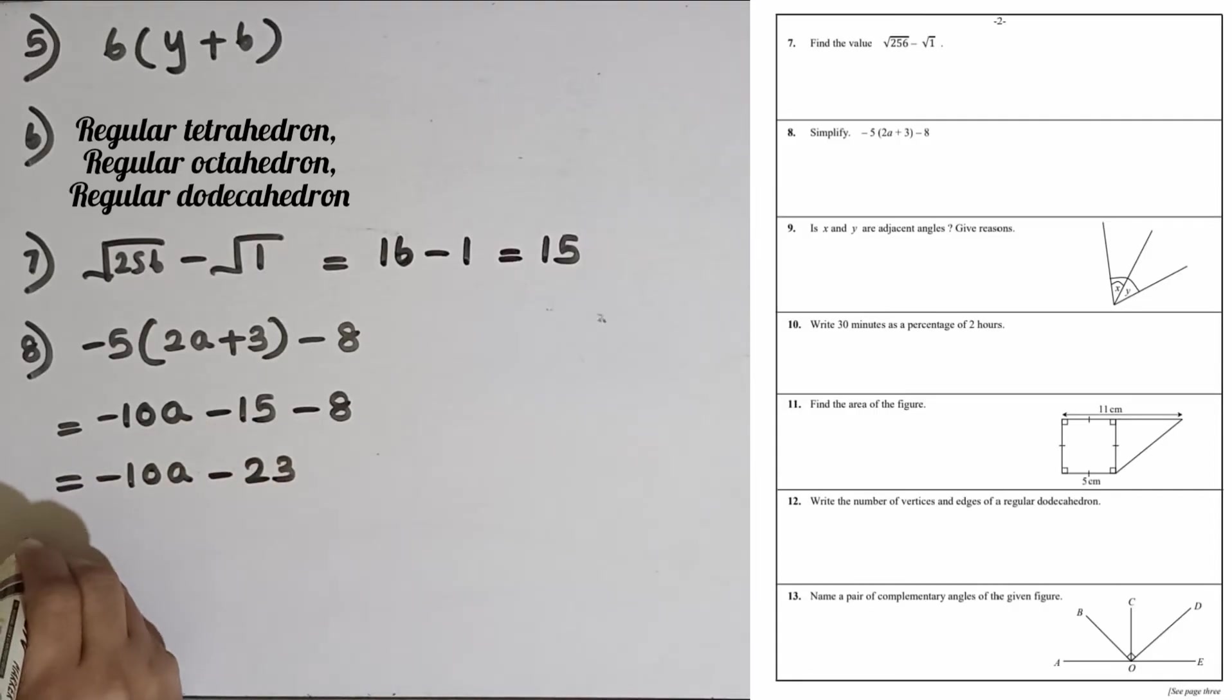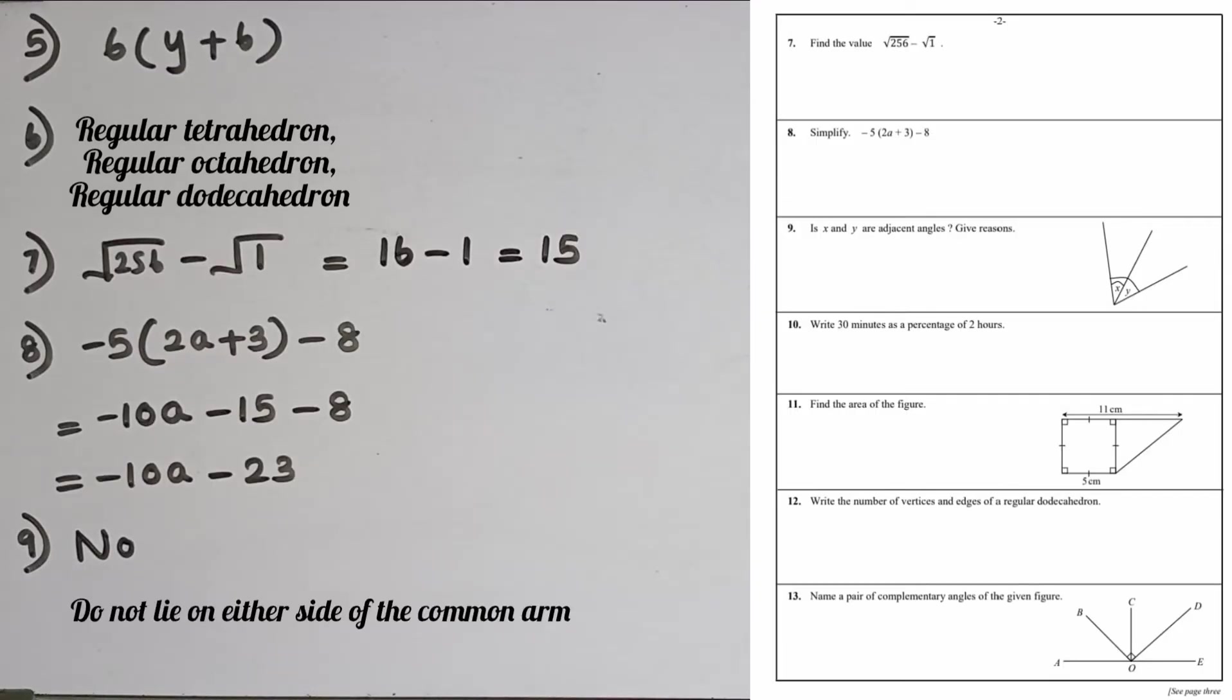Question number 9: If x and y are adjacent angles, give reasons. No, these two are not adjacent. What is the reason for that? Although there is a common arm and a common vertex, these two angles do not lie on either side of the common arm. They are on the same side of the common arm.